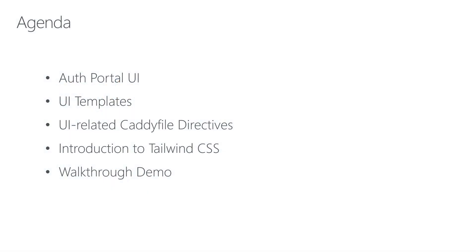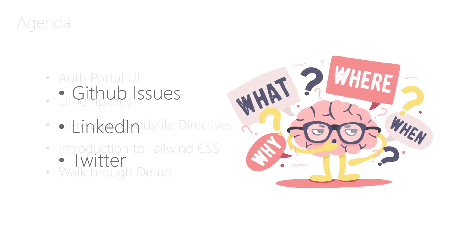Starting with the agenda: we'll describe what the authentication portal UI is, go over the templates and Caddy file directives, learn about Tailwind CSS, and go through an end-to-end hands-on demo on how you can modify the look and feel of the UI portal. If you have questions, please ask them on GitHub. You can also connect on LinkedIn and Twitter.